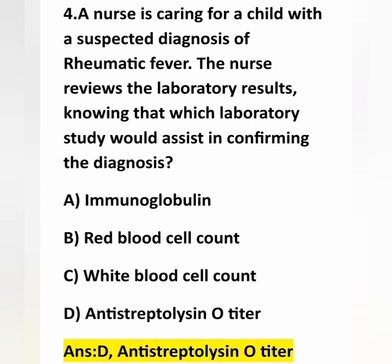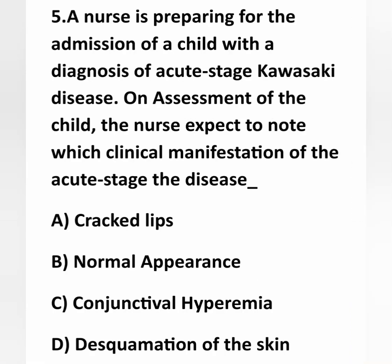If two major criteria or one major criteria are present, it indicates rheumatic fever. Two minor manifestations also suggest a chance of rheumatic fever. Option D, anti-streptolysin O titer, is correct. Immunoglobulin, red blood cell count, and white blood cell count are not correct — they are not related to confirming this diagnosis.